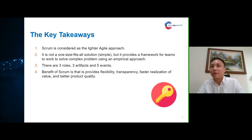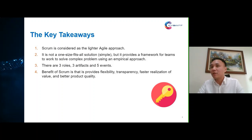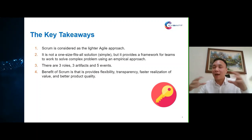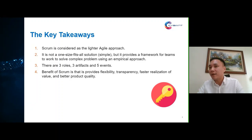There are four key takeaways. First, scrum is considered the lighter agile approach — easier to adopt, understand, and practice. Second, it is not a one-size-fits-all solution, but provides a framework for teams to solve complex problems using an empirical approach — making decisions based on what is observed and based on experience. Third, there are three roles, three artifacts, and five events — knowing this, you should now have a picture in mind of how scrum works. Fourth, the benefits of scrum include flexibility, transparency, faster realization of value, and better product quality.